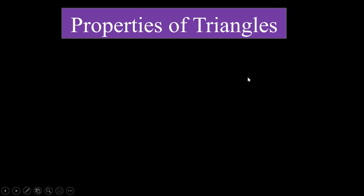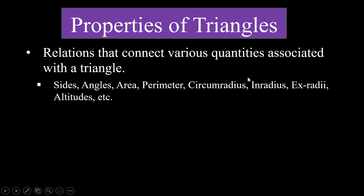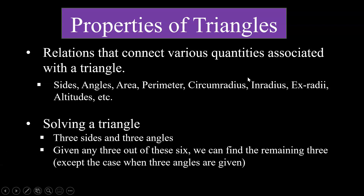Hello students. In this series of videos we are going to look at the chapter 'Properties of Triangles', also known as 'Solutions of Triangles'. This chapter mainly deals with the relations which connect various quantities associated with a triangle — for example, sides, angles, area, perimeter, and so on. With the help of these relations we can actually solve a triangle, and we'll see more about this towards the end of the chapter.